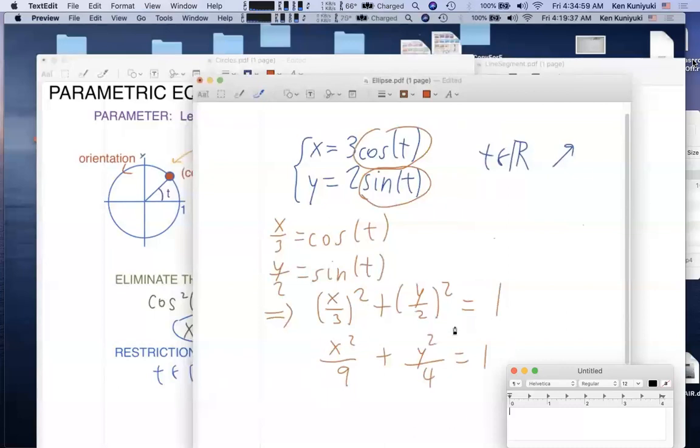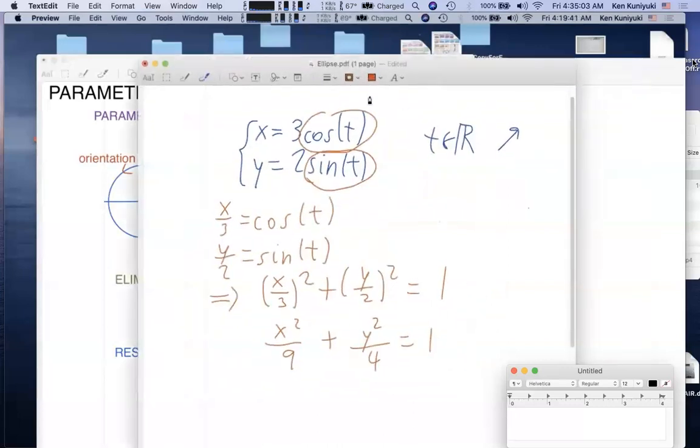And that's the standard form for an ellipse centered at the origin. It's horizontal because the larger number is under the x squared stuff. A equals 3. B equals 2. Center at the origin. And again, the curve here is oriented counterclockwise. The particle travels counterclockwise along this ellipse.